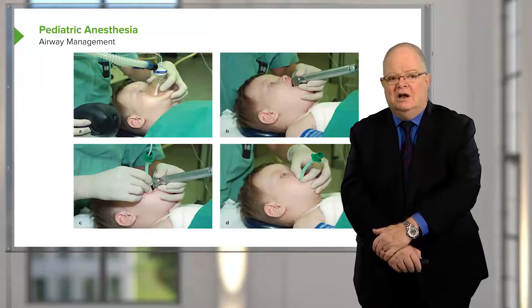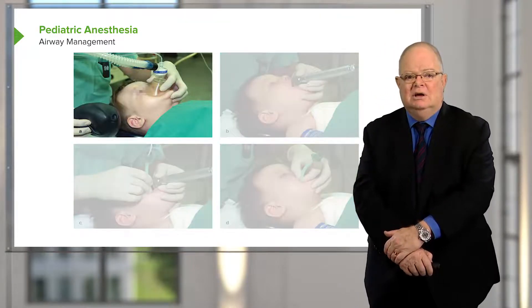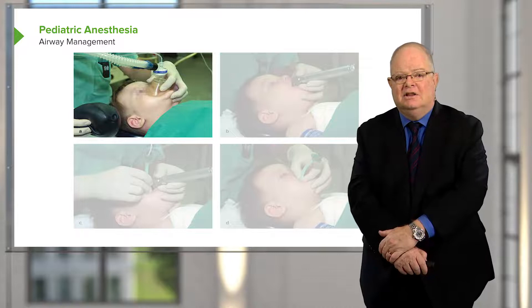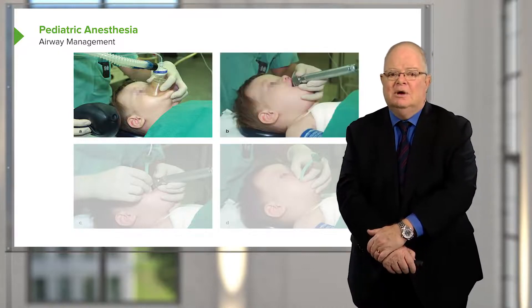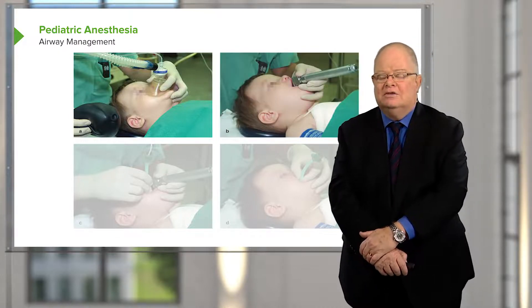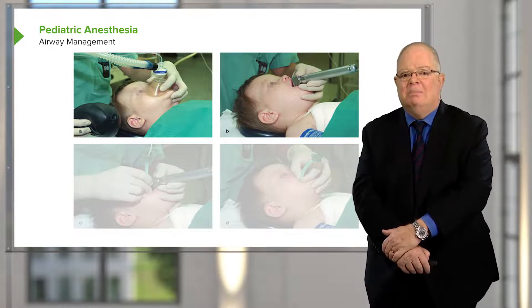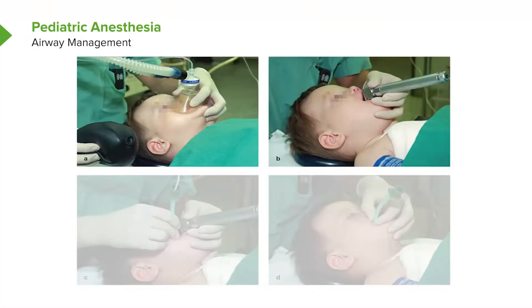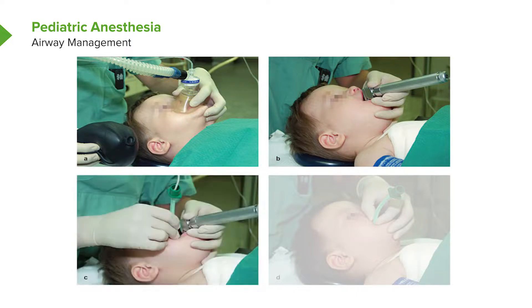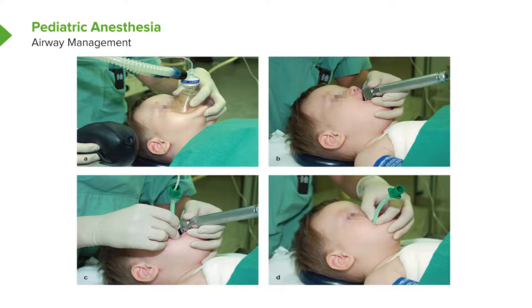Here's a child being intubated — beginning with mask ventilation. The laryngoscope handle is much smaller than in an adult, making it easier to manage and balance. The anesthesiologist passes the tube, and in the fourth picture the tube is in a satisfactory position. It will then be secured and the anesthesiologist will take over the child's breathing.